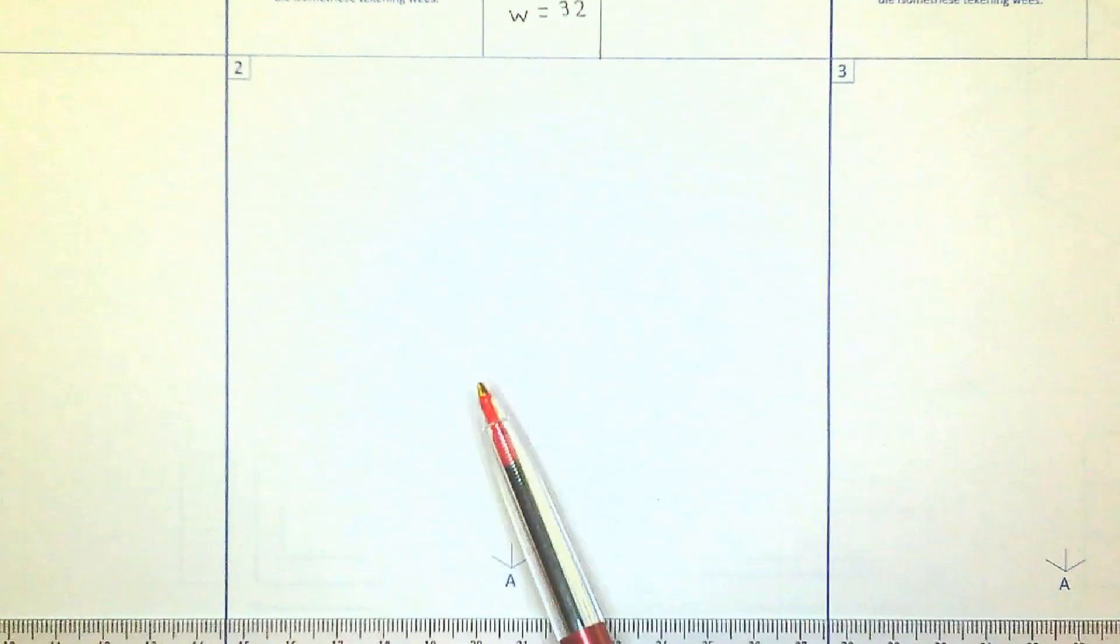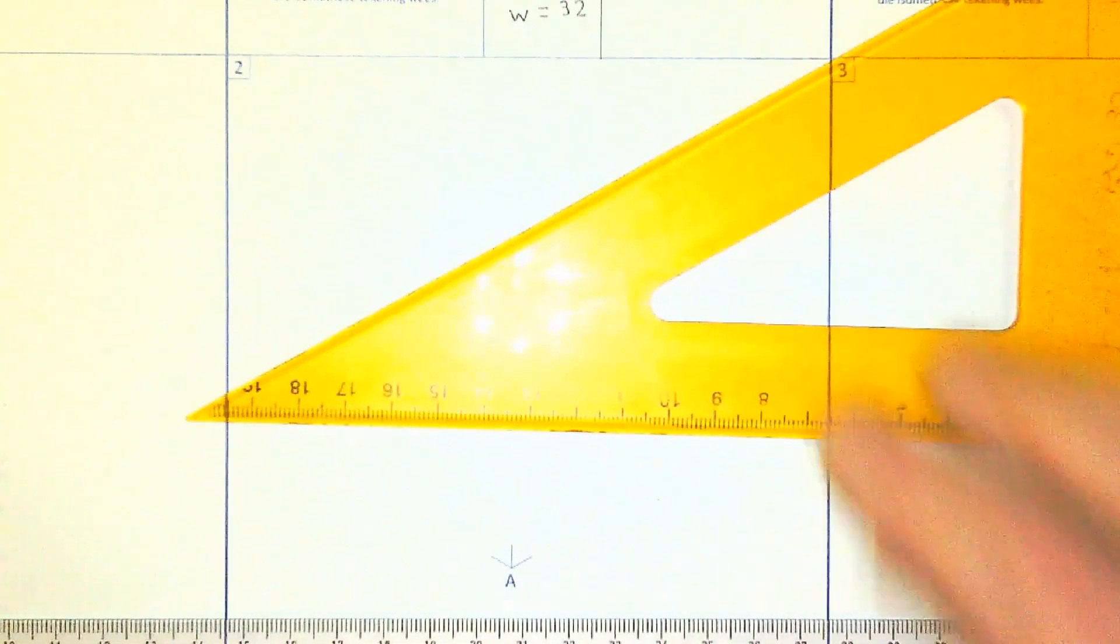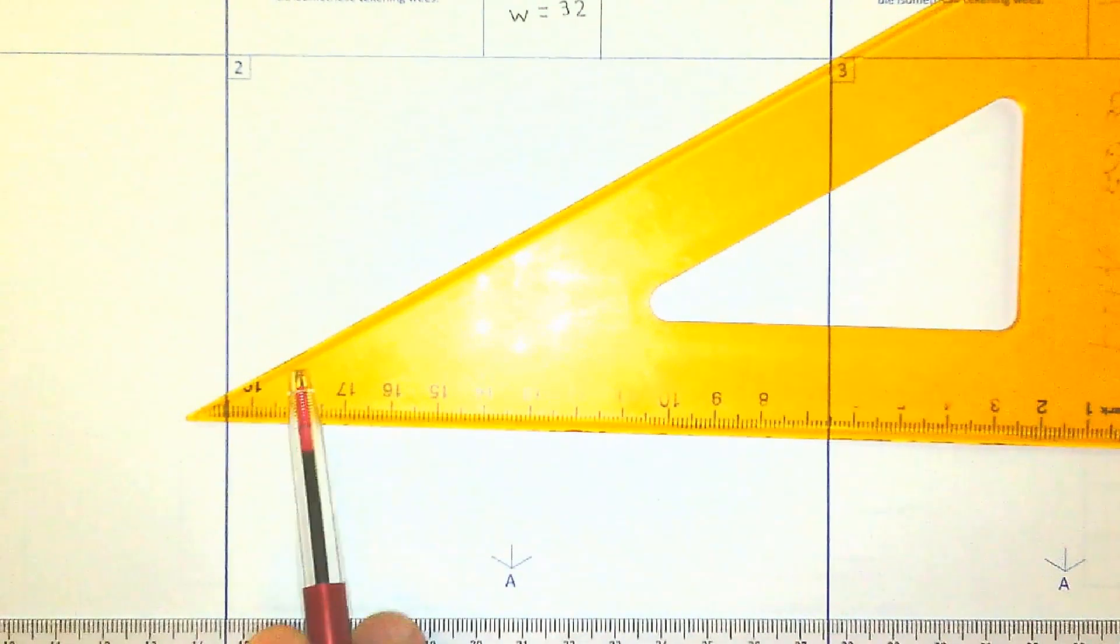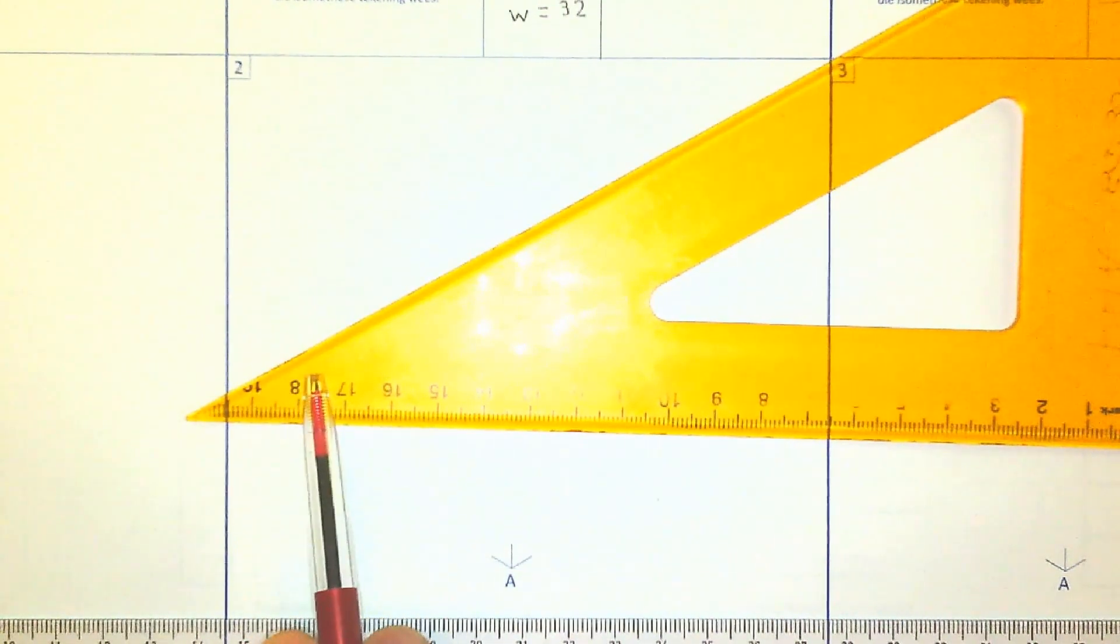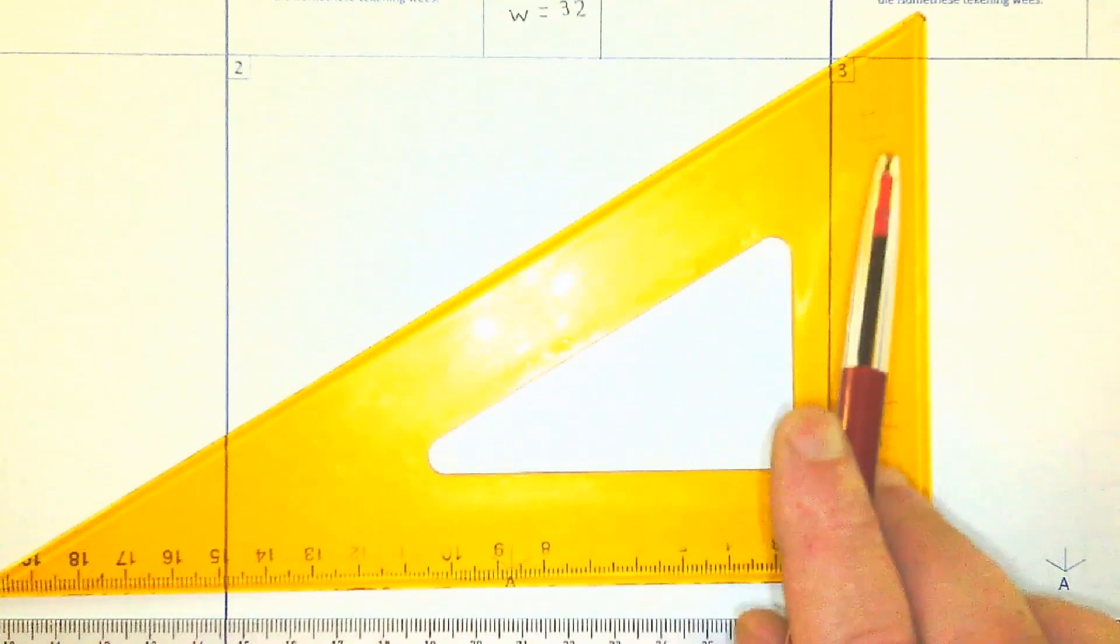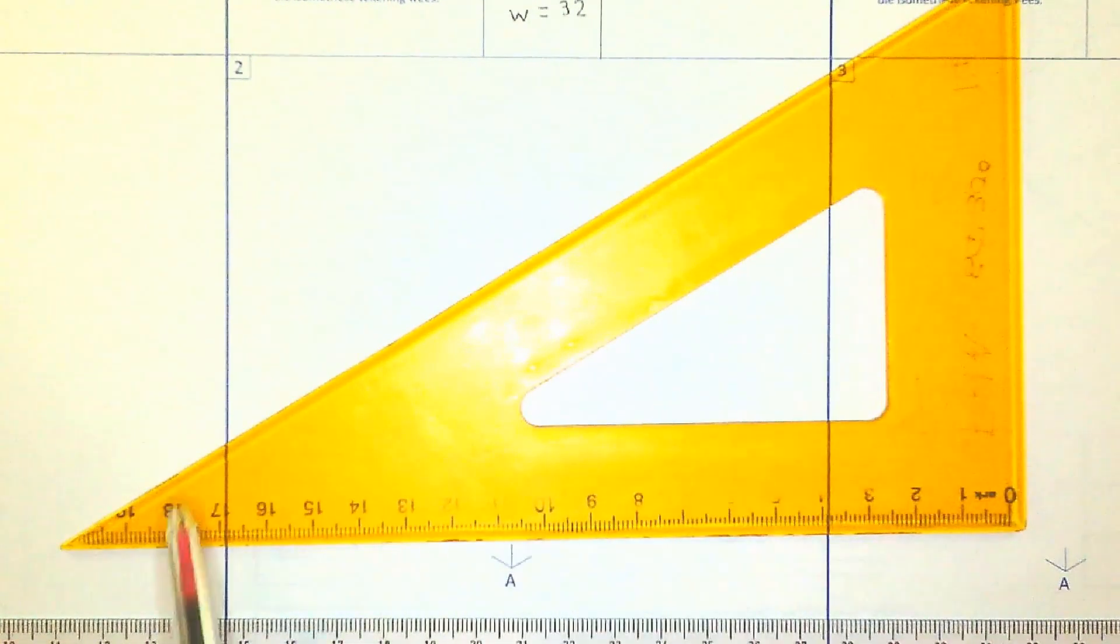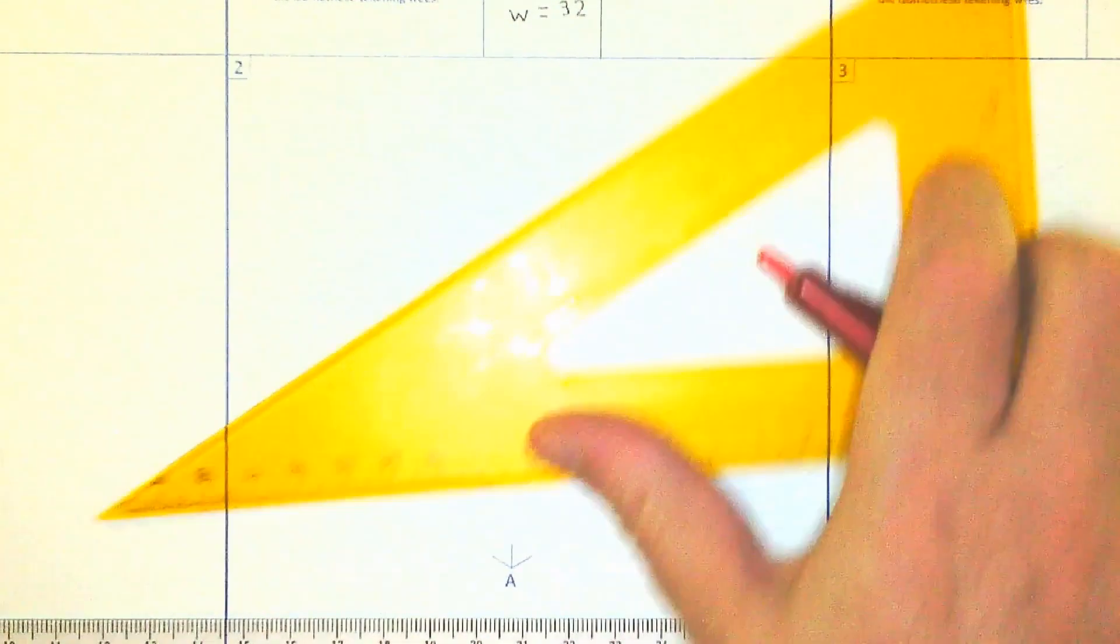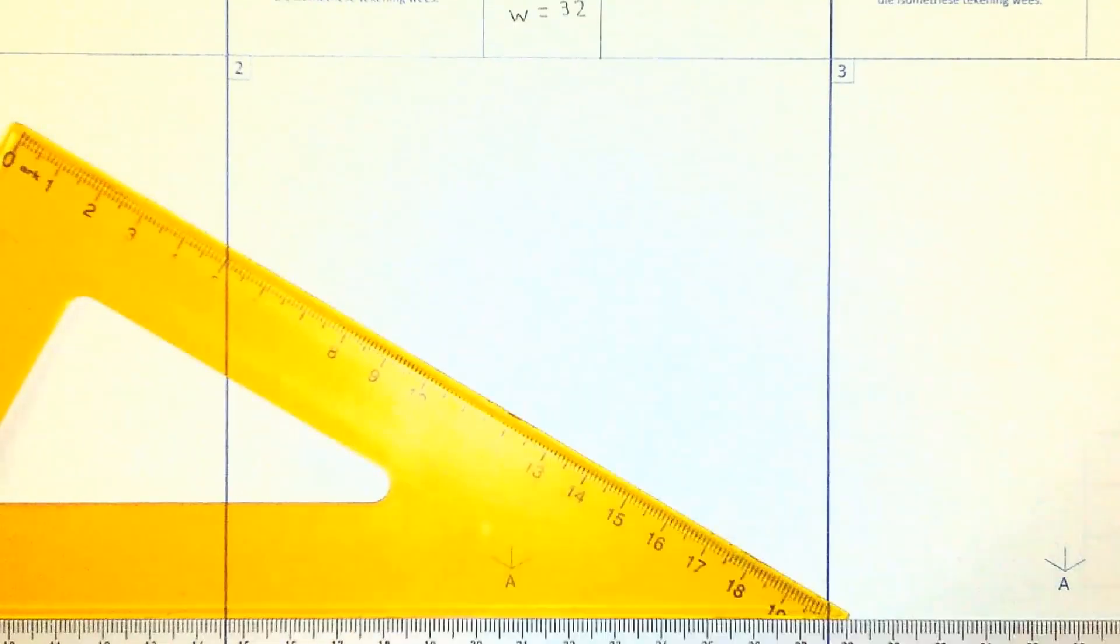So we are going to have to create our own lines and we do this by using the 30-60 degree set square. Please take note that you have to use the small angle on the set square. So this one is 60, we are not going to use this one. We are going to use the vertical side and the 30-degree angle.